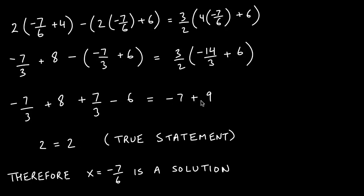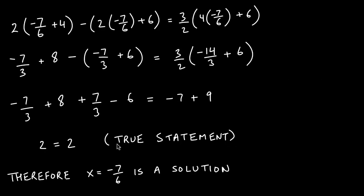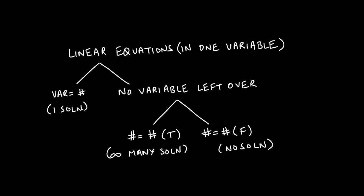Something convenient happens: the negative 7/3 and positive 7/3 cancel each other out. Then 8 minus 6 is 2 on the left, and negative 7 plus 9 is 2 on the right. Plugging in negative 7/6 for x gives a true statement, proving it is indeed a solution — not just a potential one.